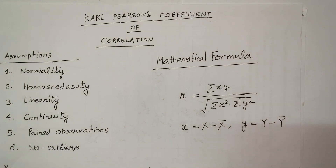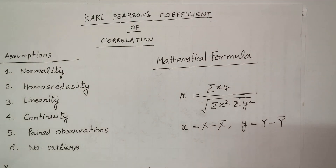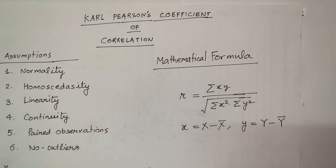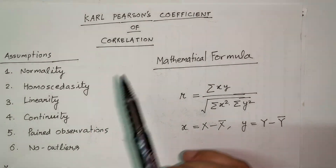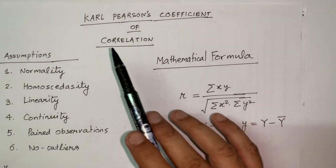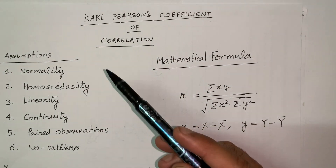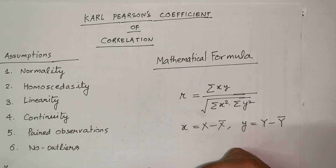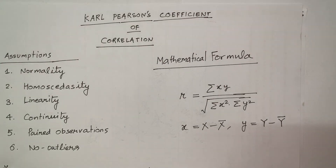In this particular video I am not describing the details of correlation or the different types — I will be coming up with a different video on that. Right now I'm going to focus on calculating one coefficient of correlation: Karl Pearson's coefficient of correlation.